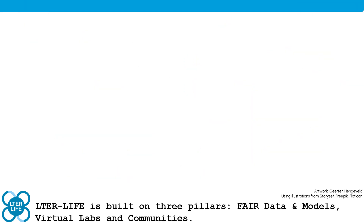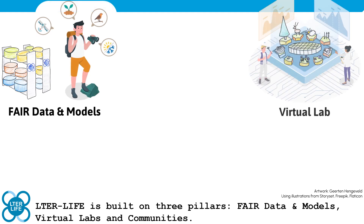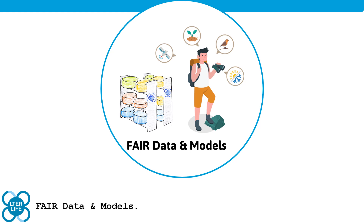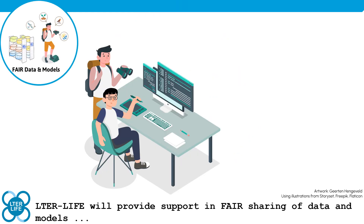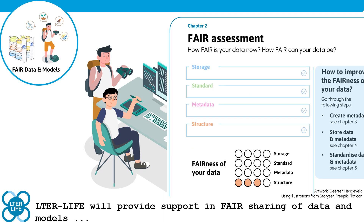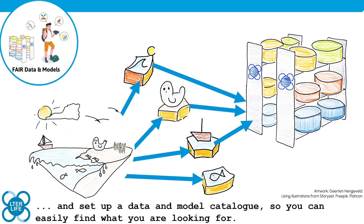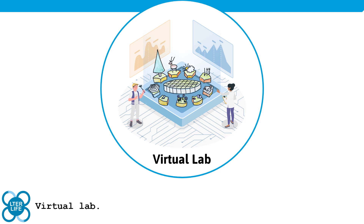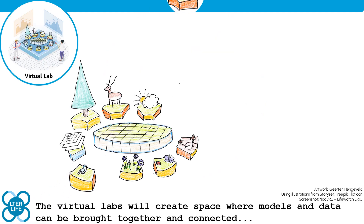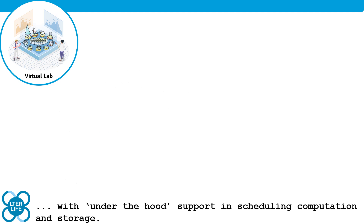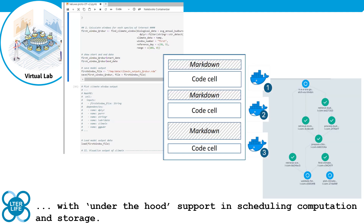LTR Live is built on three pillars: Fair Data and Models, Virtual Labs, and Communities. LTR Live will provide support in fair sharing of data and models and set up a data and model catalog so you can easily find what you are looking for. The virtual labs will create a space where models and data can be brought together and connected, with under-the-hood support in scheduling, computation and storage.